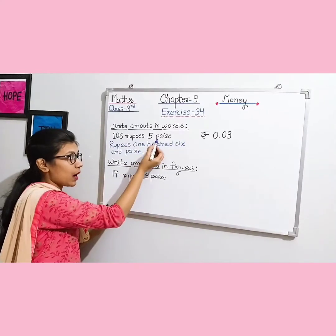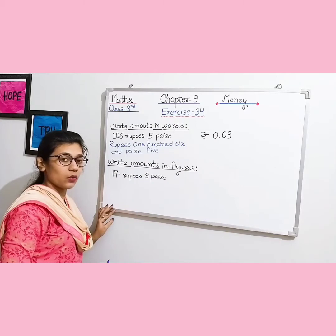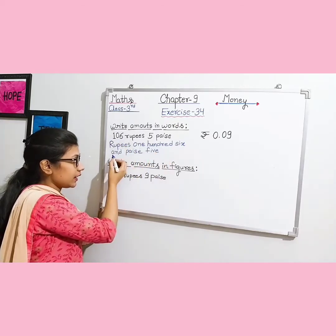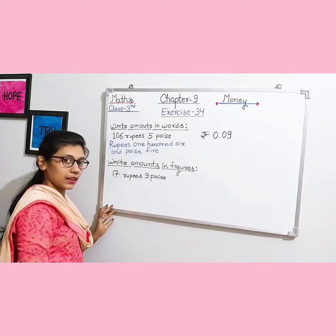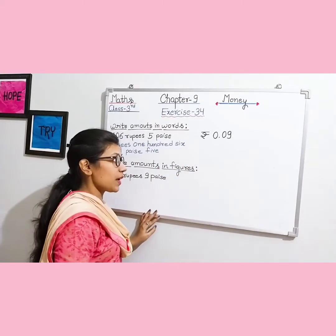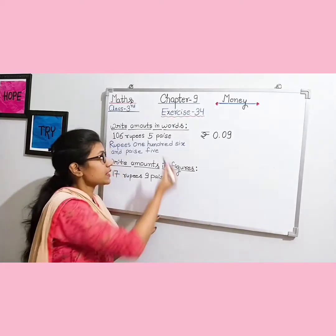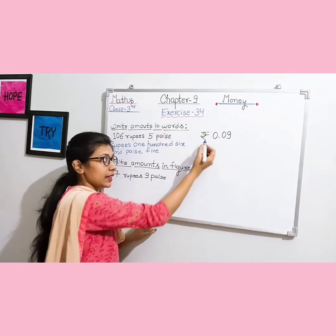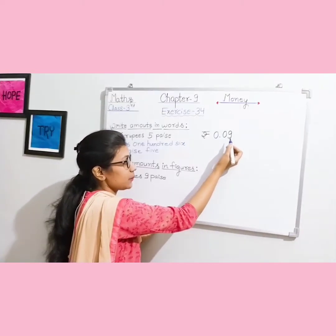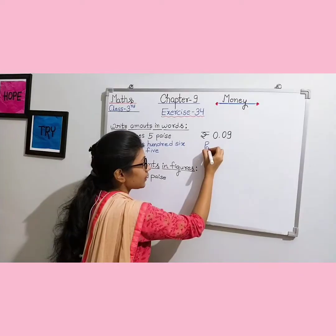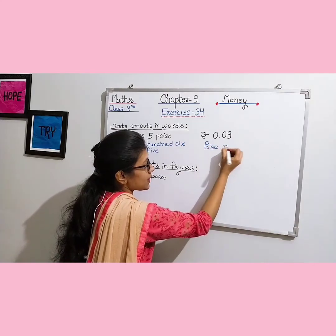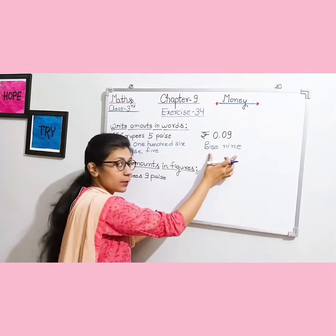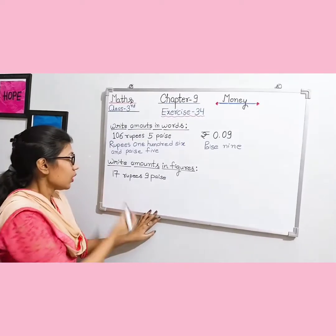So whenever an amount is given and you have to write it in words, write 'Rupees' first, then the number name for the rupees amount, then 'and', then 'paise', then the number name for the paise amount. For example, if the amount is 0 rupees 9 paise, you do not write '0 rupees'. You simply write 'paise 9', because the number name is only for 9 paise.